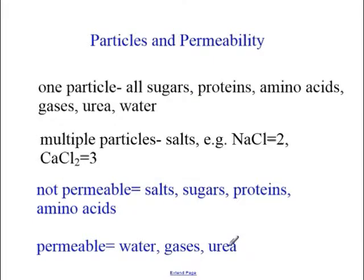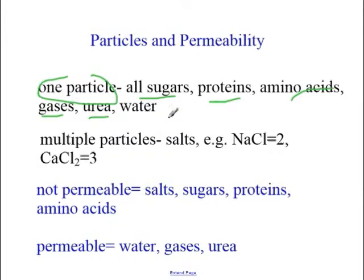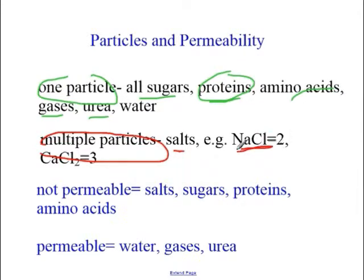Let's figure out how many particles are in something. What has one particle? Anything held together by covalent bonds: all sugars, all proteins, amino acids, all gases like CO2, urea, and water—all these things are one particle. So if I have one millimole of protein, you still have one milliosmolality, because one particle times one is still one. What has multiple particles? Salts. Sodium chloride has two particles—sodium and chloride—so you multiply by two to get osmolality. Calcium chloride disassociates into three: one calcium and two chloride. So you'd multiply by three.